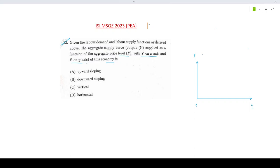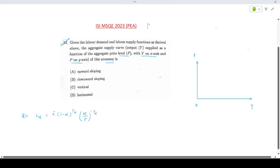If we recall from question 11, we have obtained the labor demand curve as k bar into (1 minus alpha)^(1/alpha) * (w/p)^(-1/alpha), where alpha lies between 0 and 1.